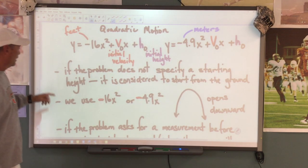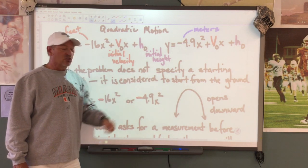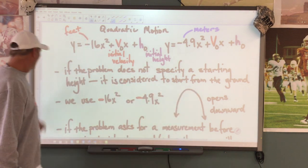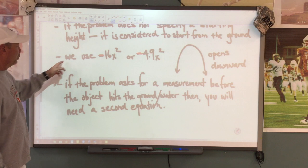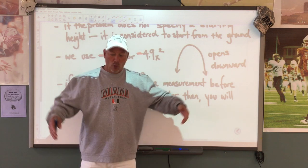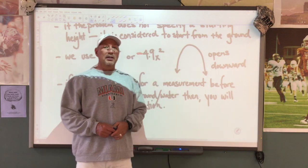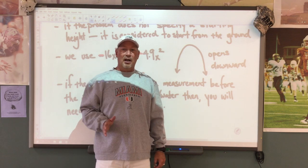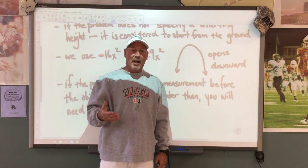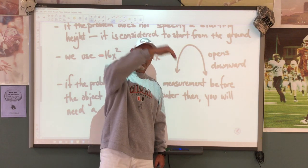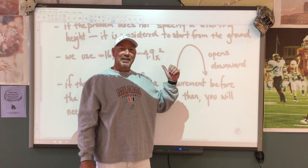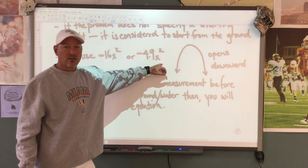A couple of things to remember. If the problem does not specify a starting height, it will be considered as starting from the ground. We will use negative 16 or negative 4.9x squared because we want our graph to open downward. We're dealing with throwing or shooting an object in the air, or maybe jumping — but eventually we come back down due to gravity. So we get a parabola that opens downward, and we use a negative x squared term.